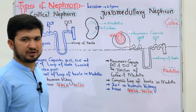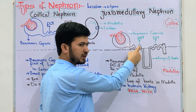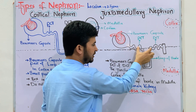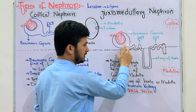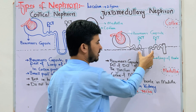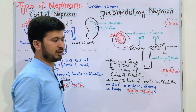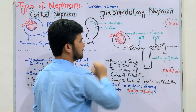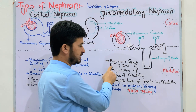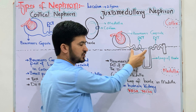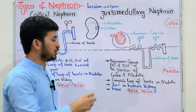The loop of Henle in the juxtamedullary nephron extends completely into the medulla region. The complete loop of Henle is located in the medullary region. The PCT and DCT are at the cortex-medulla junction, while the loop of Henle is completely in the medulla region.